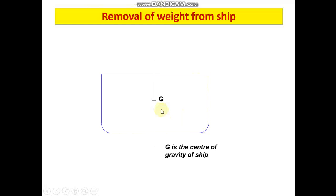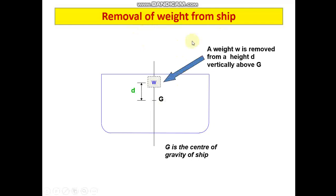This discussion becomes very important for any seafarer going out to sea. Let us discuss the scenario where we have a ship where G is the center of gravity, and we are removing a mass from the ship. A weight w is removed from a height d — the distance between the center of gravity of this weight and the center of gravity of the vessel is small letter d. So weight w at a distance d apart is removed from the vessel.